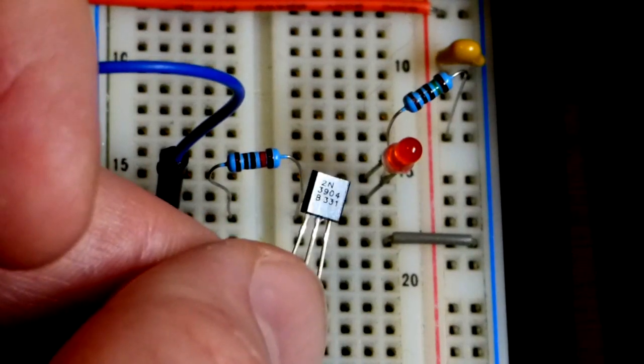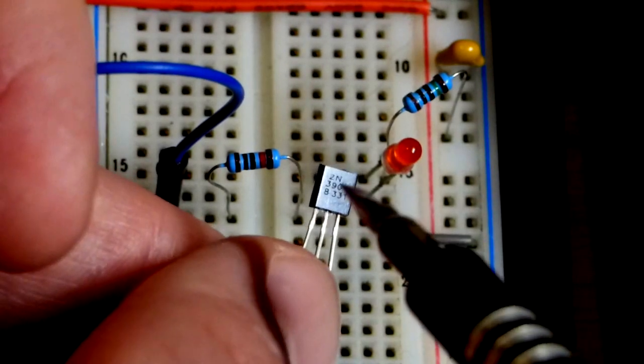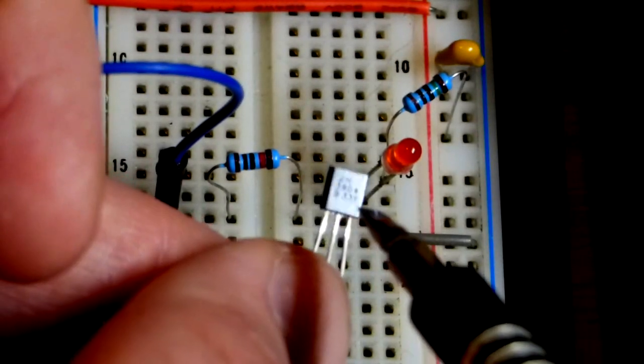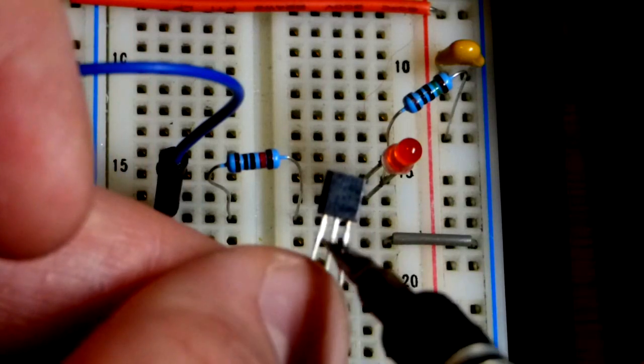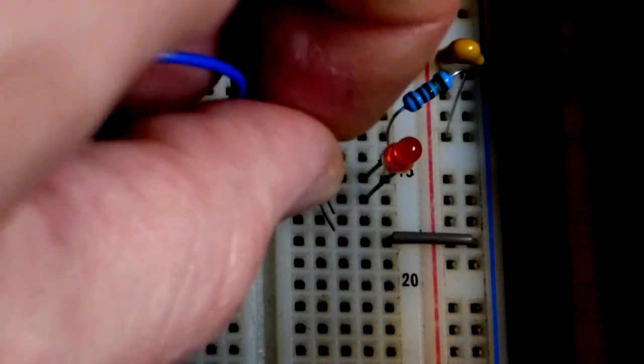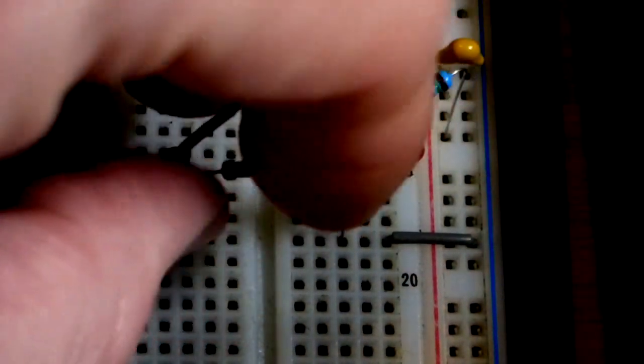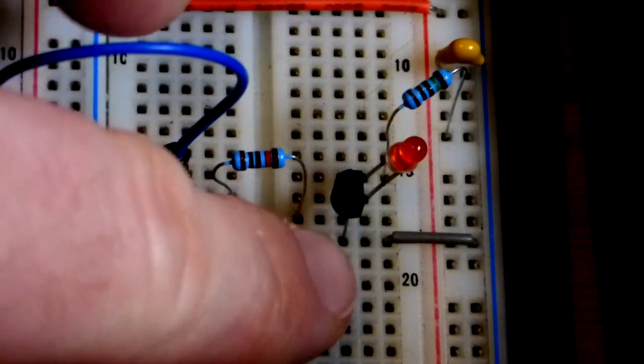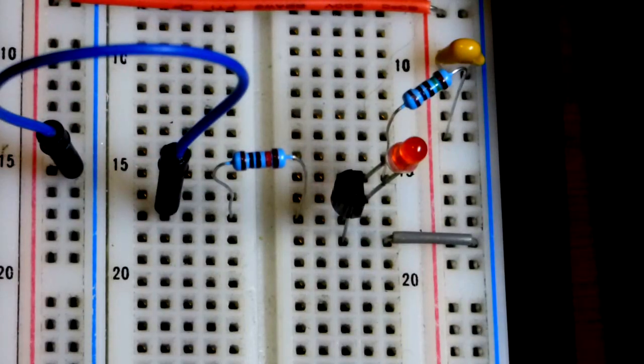So now we'll look at the circuit on the board. I don't know if you can read that, but it says 2N on top, 3904. And we got the emitter to the left, base in the middle, collector to the right. The collector goes to the cathode, the short lead of the LED, the base to the 10 kilo ohm resistor right there, and the emitter to ground down there.